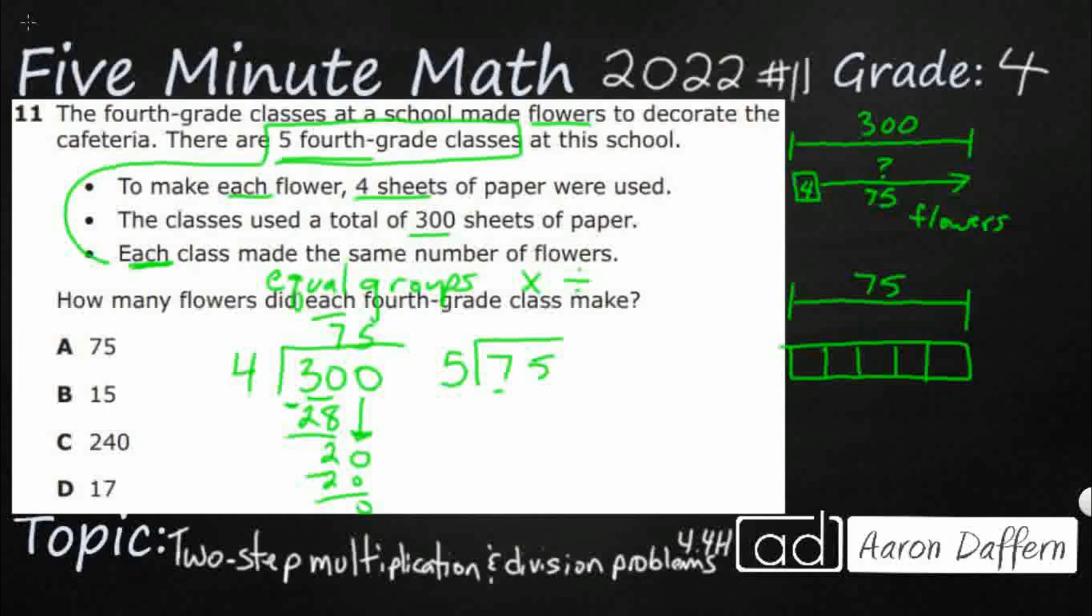So I need to take my 75 and I need to split it into five equal groups. So five goes into this first digit. Yep, one time. That's going to be five. Bring that down. That's two. Two is smaller than five. Five into 25 goes in there five times. So I'm thinking my answer is 15.